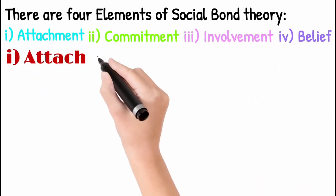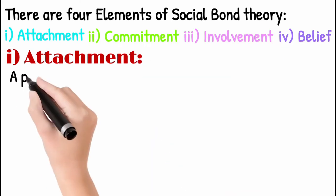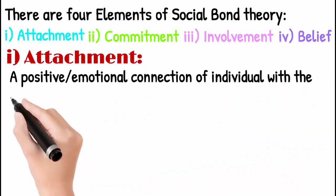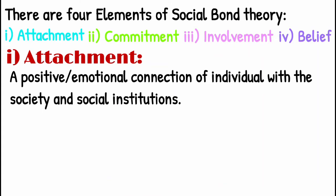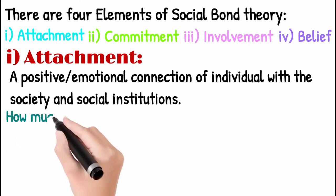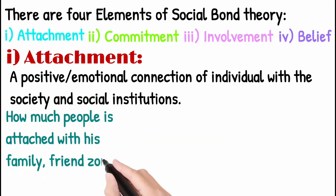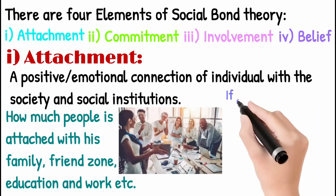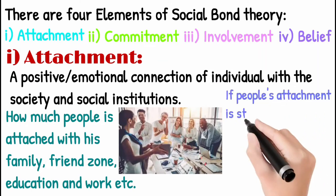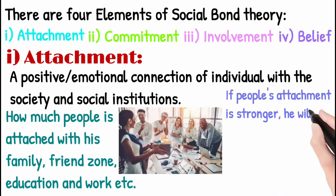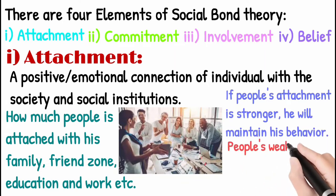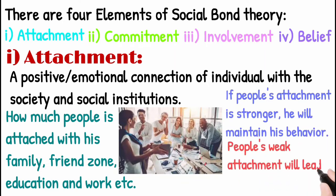Number one: Attachment — a positive or emotional connection of individuals with society and social institutions. How attached are people to their family, friend zone, education, and work? If people's attachment with society is strong, they will definitely maintain their behavior. And if their attachment with society is weak, it will lead them toward criminal activities.